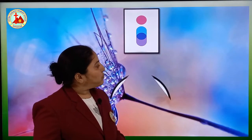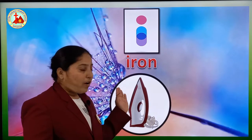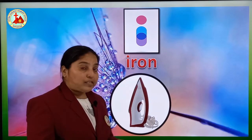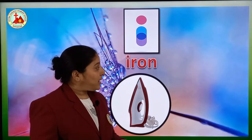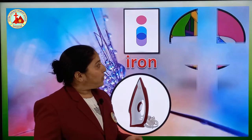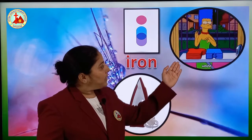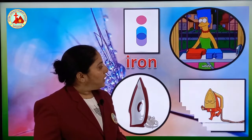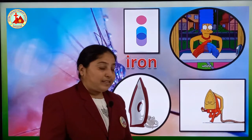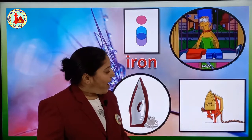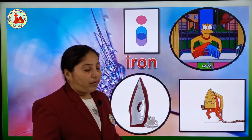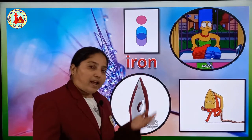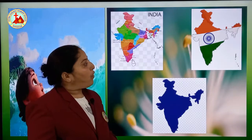Now next one is I for iron. You all know, right, for what the iron is used? Your mama must be using it at home. I for iron. See, this lady is ironing clothes with the help of iron. Now let's see the spelling: I, R, O, N — iron. I for iron.